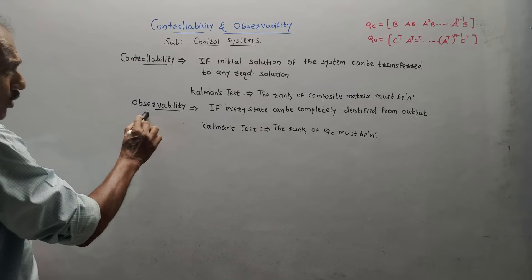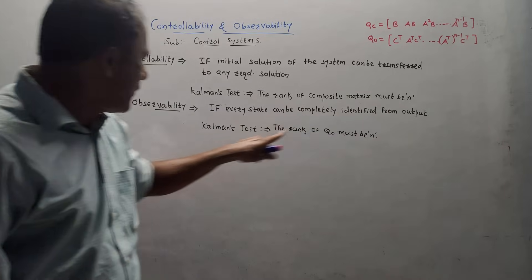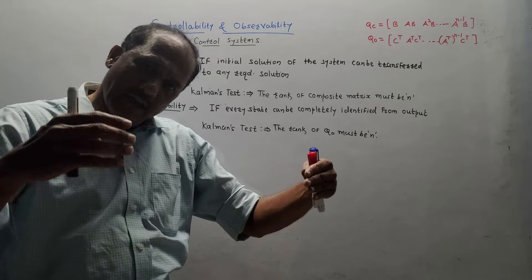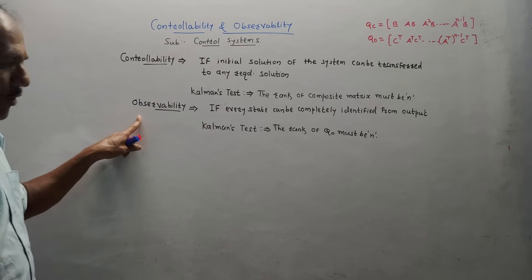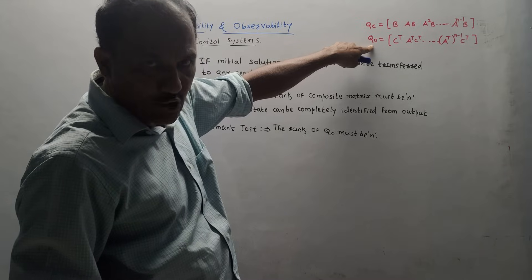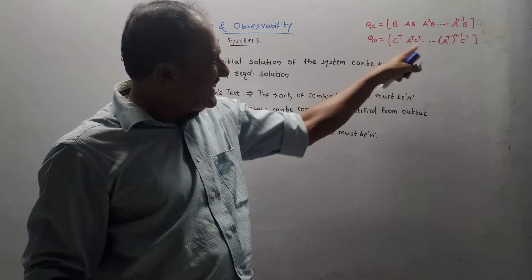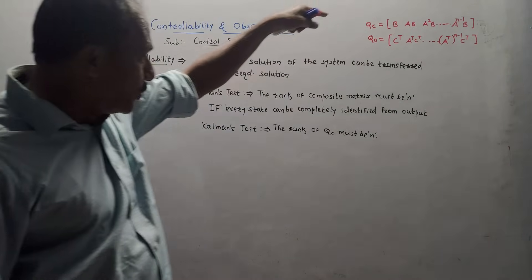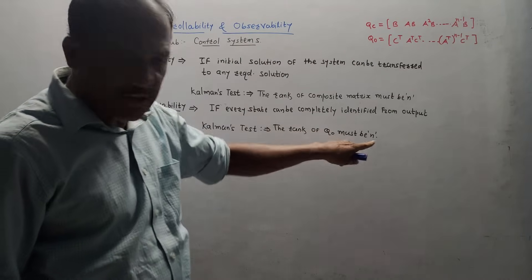The second definition is observability. If every state can be completely identified from the output — if you can identify any required state of that particular system from the output — then such a system is called observable. The composite matrix for checking observability has the format: C transpose, then A transpose C transpose, and so on. The rank of this matrix Q must be N.